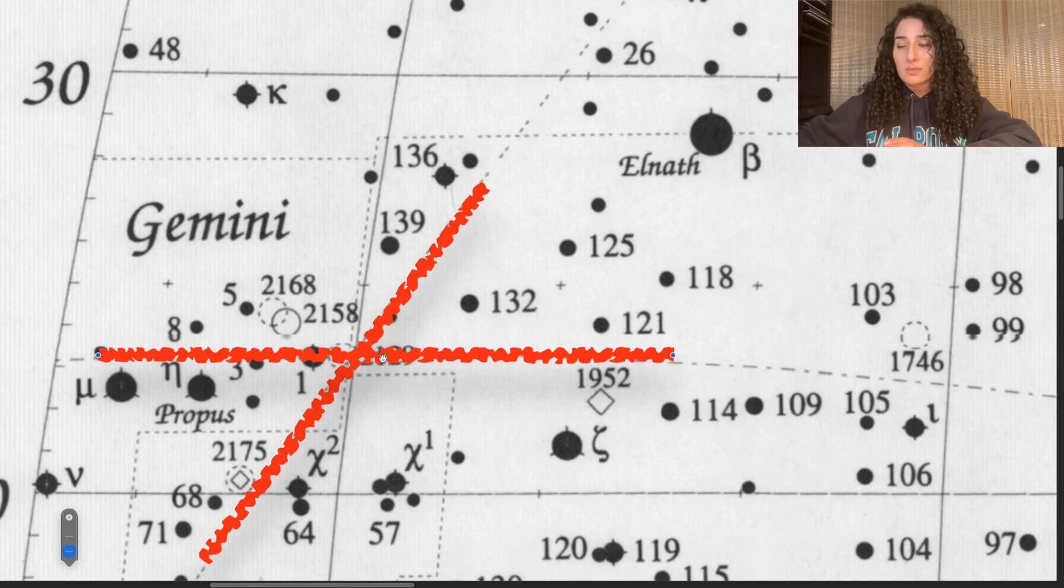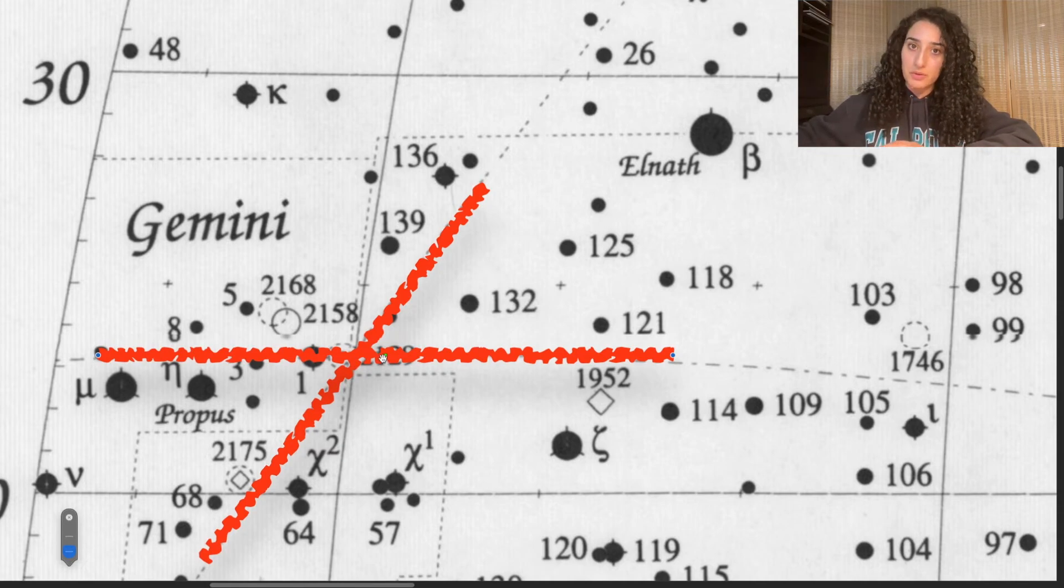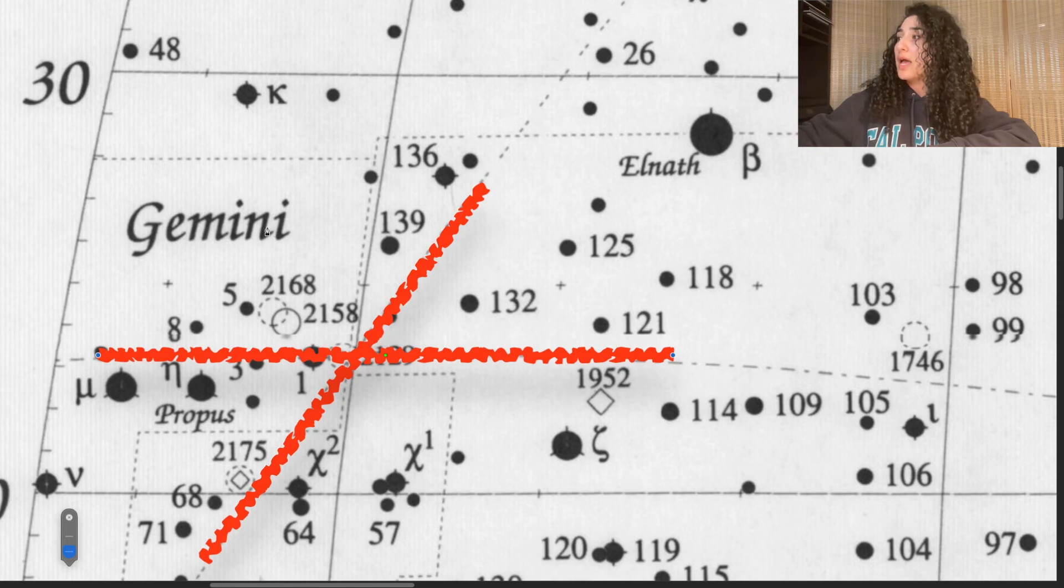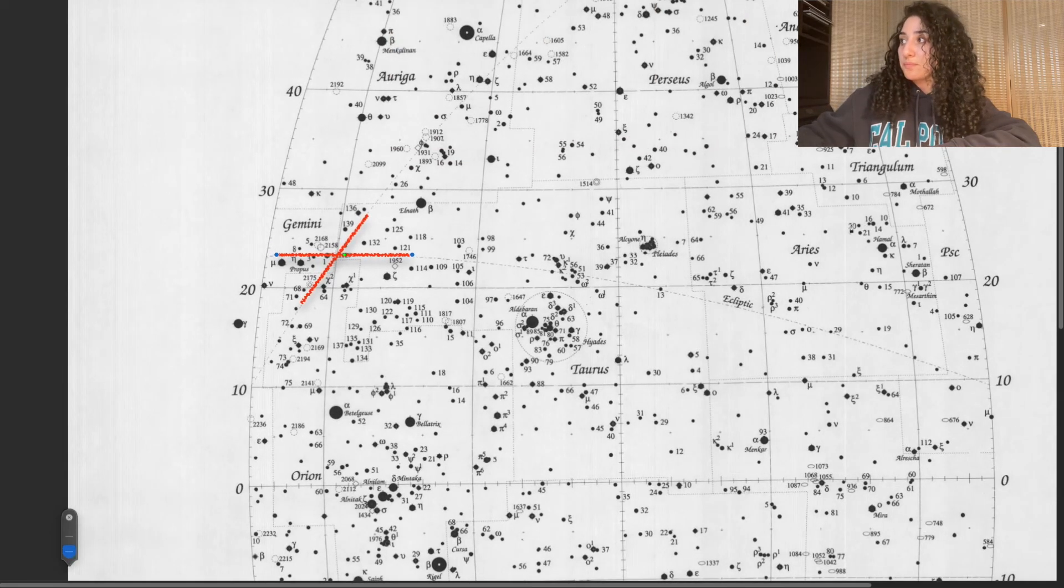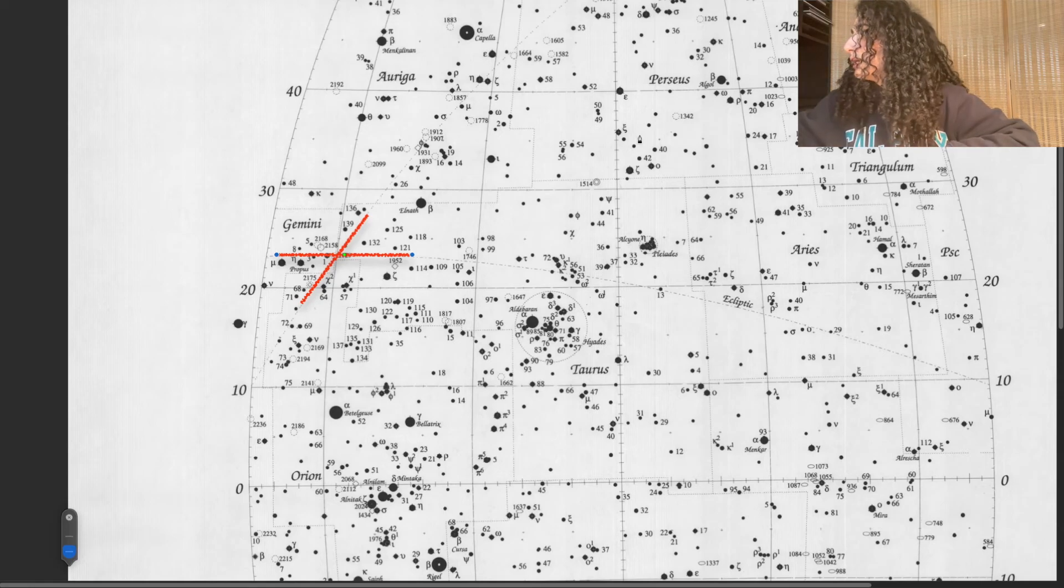Regardless, we're looking to see where these two are crossing, and it happens to be crossing right here, but the interesting thing is that it's very close to a boundary between two constellations. So there's the constellation of Gemini off to the left, and the constellation of Taurus off to the right.